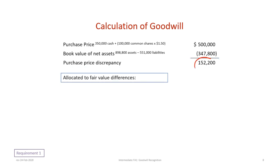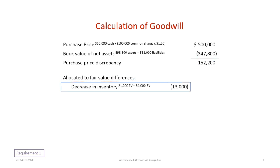We then take this purchase price discrepancy and figure out how much of it is allocated to the fair value differences in any of the assets or liabilities. Make sure that you review the problem to identify where the fair value differences are. The data says that all amounts reported approximate their current fair values with the exception of inventory, land, and patents.